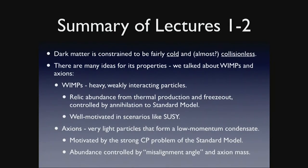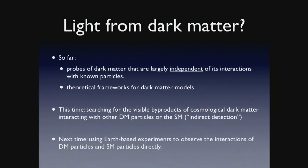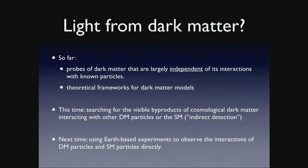You'll recall that plot from yesterday where I showed the big cloud diagram with many different theoretical ideas for dark matter. One possible way we might start to distinguish these signatures from each other is if we could see directly the effects of dark matter interactions with the standard model. This time I want to talk about indirect detection — searching for the visible byproducts of dark matter interacting with other dark matter particles or the standard model. Next time I'll talk about Earth-based searches called direct detection and collider searches.